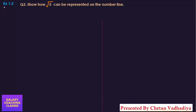Hello friends, my name is Chetan Vadadya and today we are going to solve CBSE class 9th maths exercise 1.2, question number 3: How can √5 be represented on the number line?